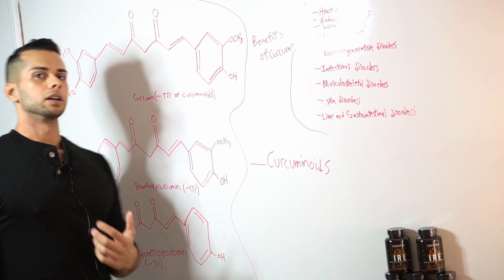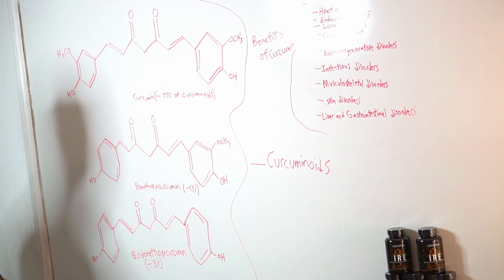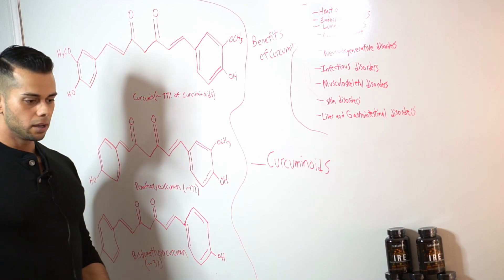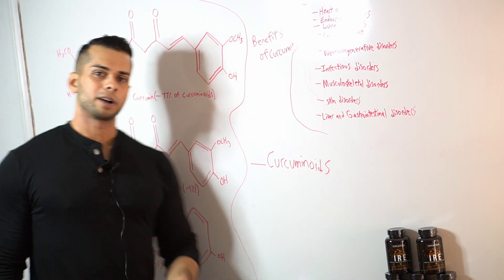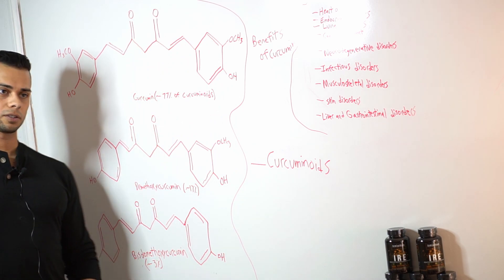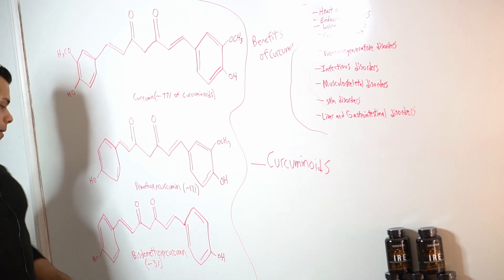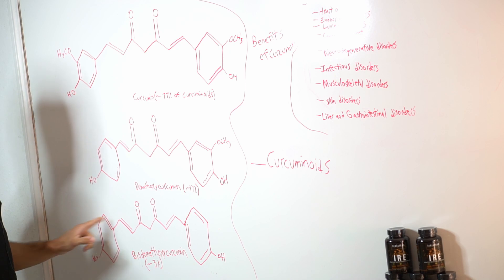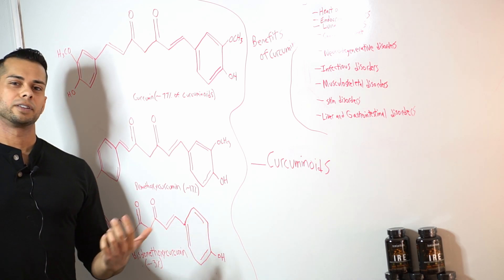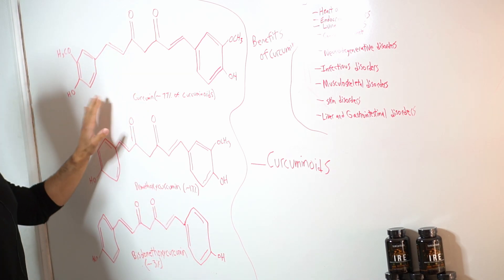So this gives it a little bit of different properties which we can dive into later and lastly of the curcuminoids we have bis-demethoxycurcumin which is the least abundant in the curcuminoids with about 3% of the total curcuminoids being composed of this structure. So in this one as the name suggests, bis meaning two, both of the methoxy groups have been removed in this structure again giving it slightly different properties compared to the parent structure of curcumin here.